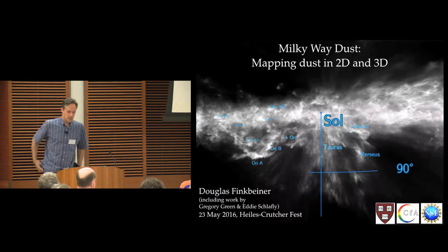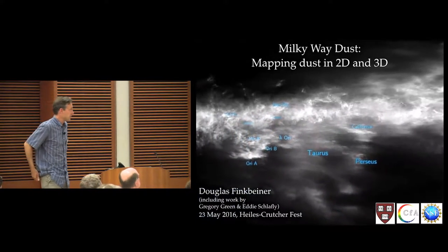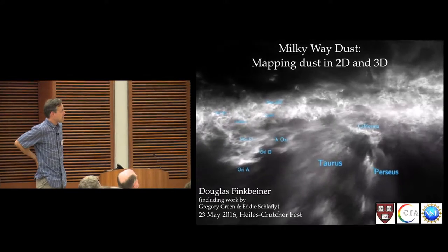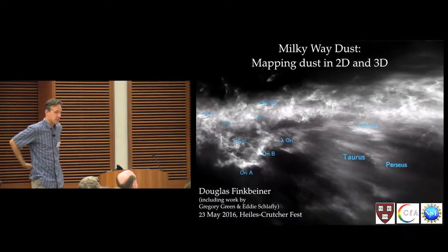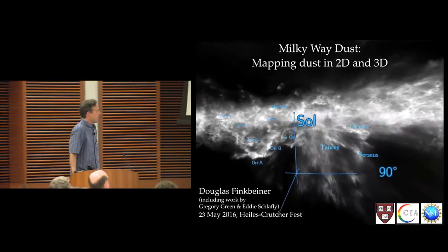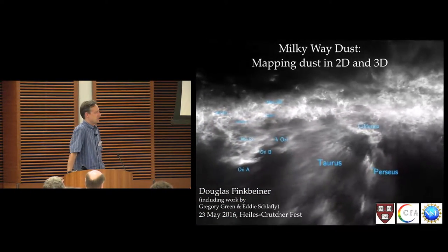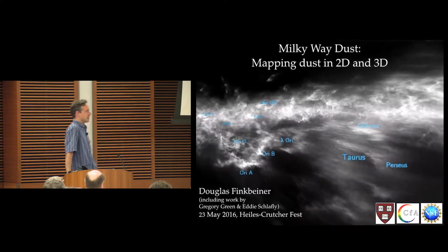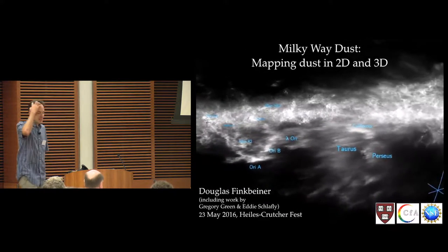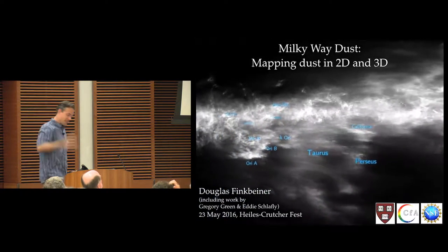When I arrived at Berkeley as a grad student in 1994, the way people estimated dust extinction was the Burstein-Heiles map. I wanted to be a cosmologist when I grew up, and Mark Davis said if you want to do something useful for cosmology make a dust map that's better. That got me started thinking about dust a long time ago.